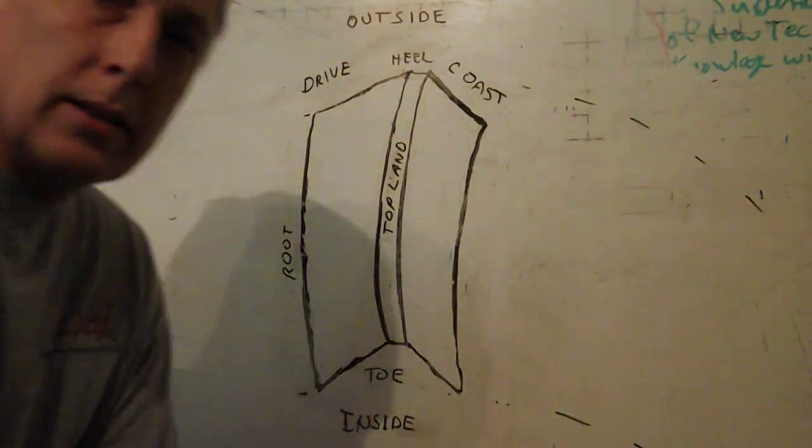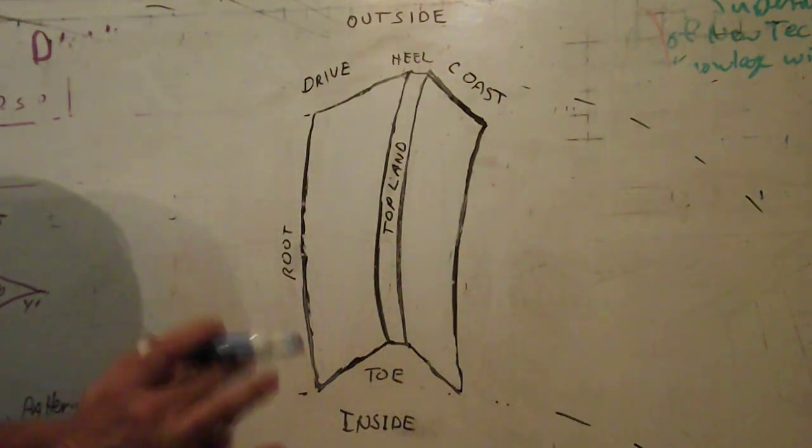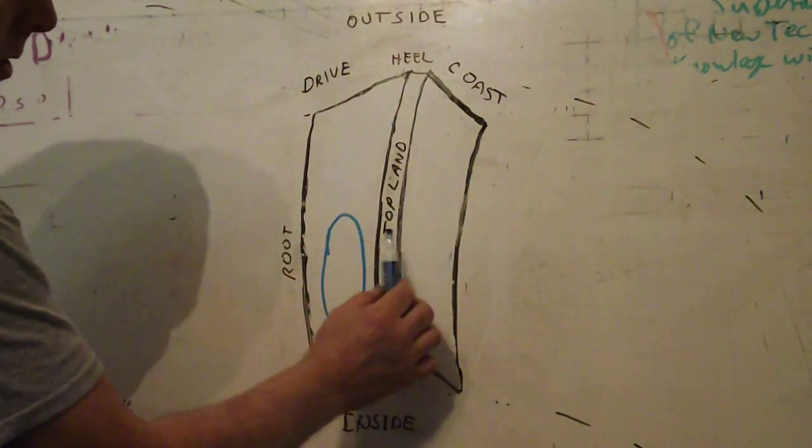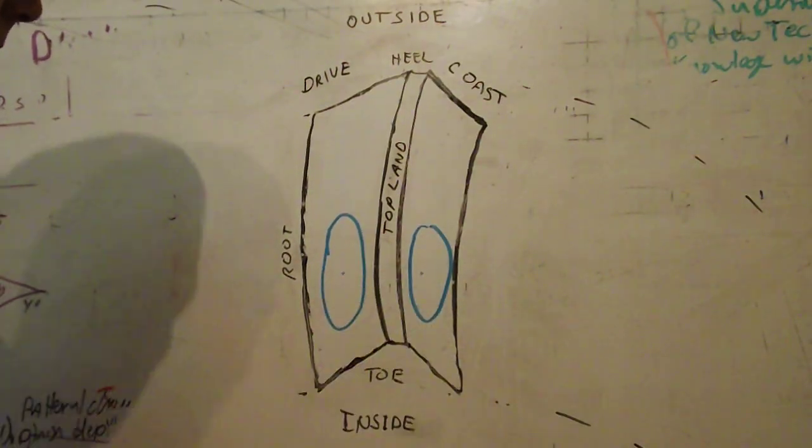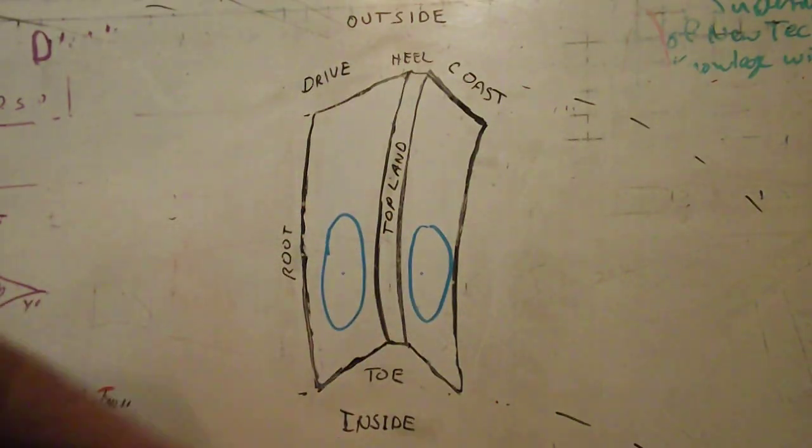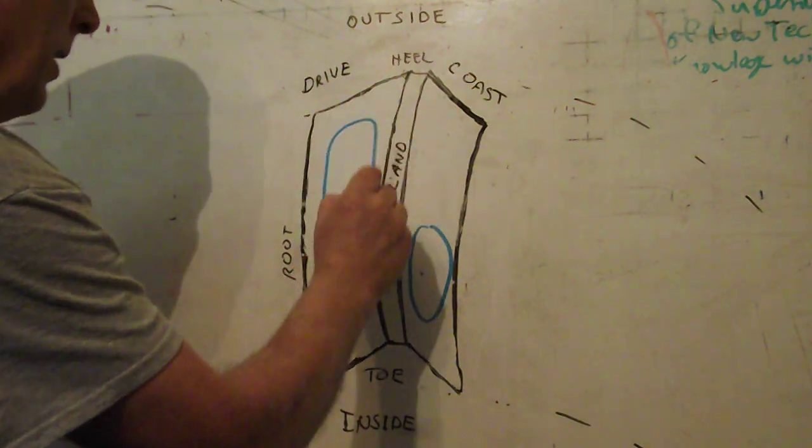I'd like to explain a bit about ring and pinion pattern change, what backlash does, and what pinion depth does. The ideal pattern is centered root to top on the drive side and coast side, and about a third on the inside.